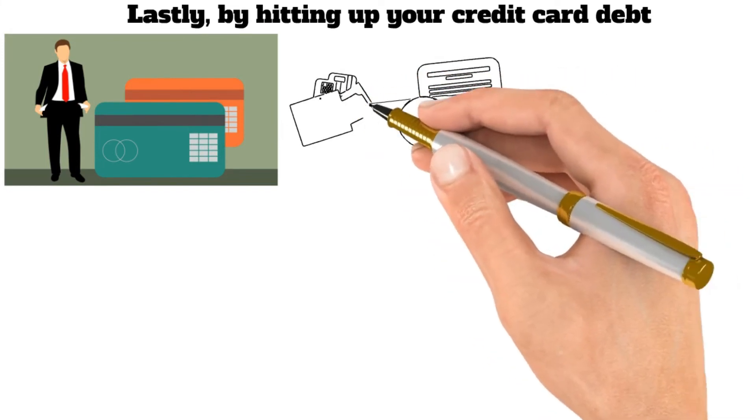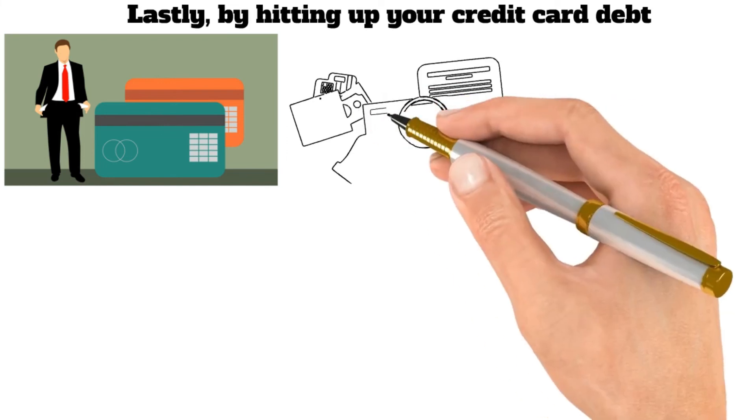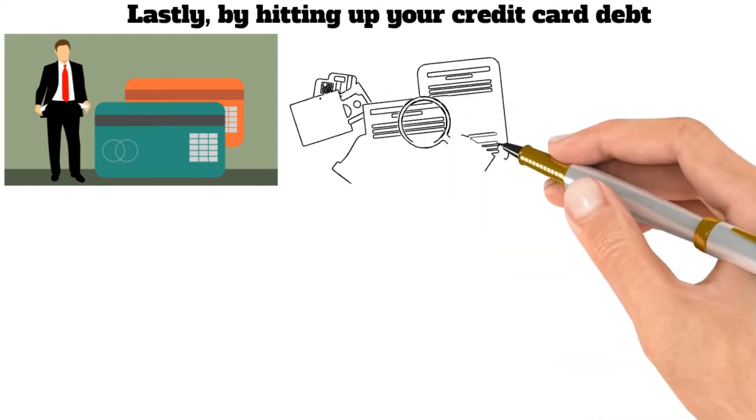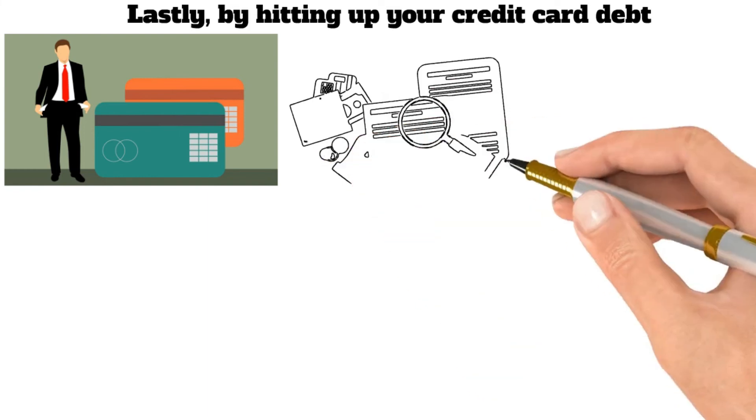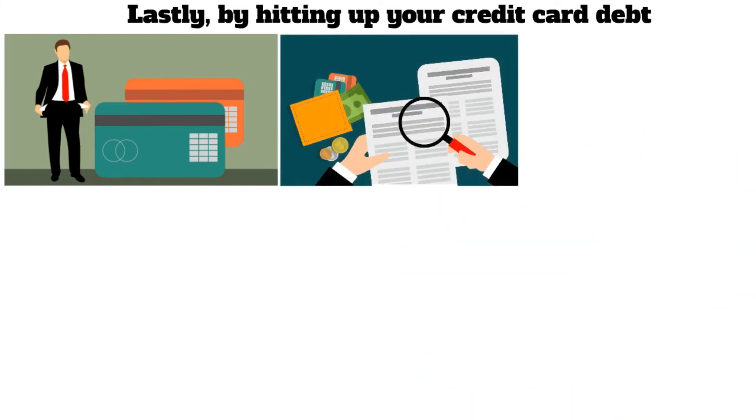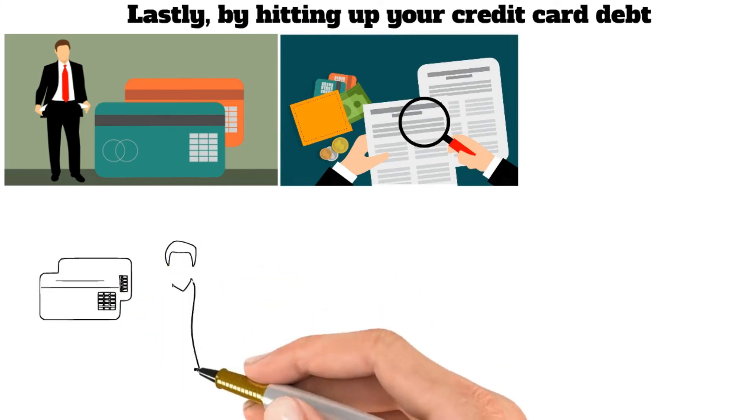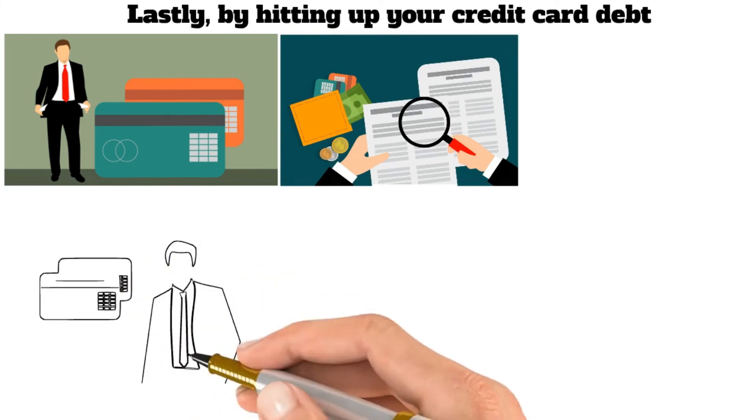Instead of using credit, people should save up their money and pay for things with cash. This will help them stay out of debt and keep their finances under control. If people are smart about their money, they'll be able to stay out of debt and build up their savings.